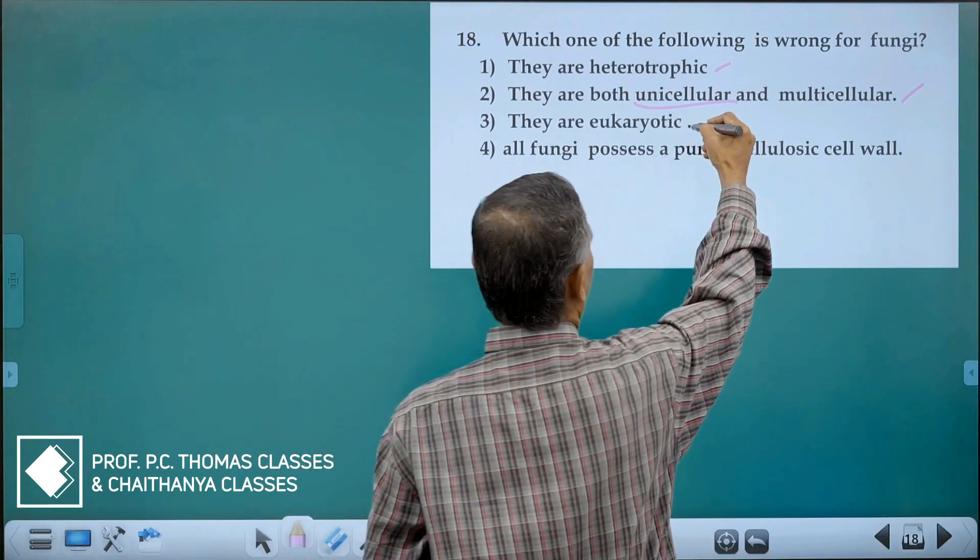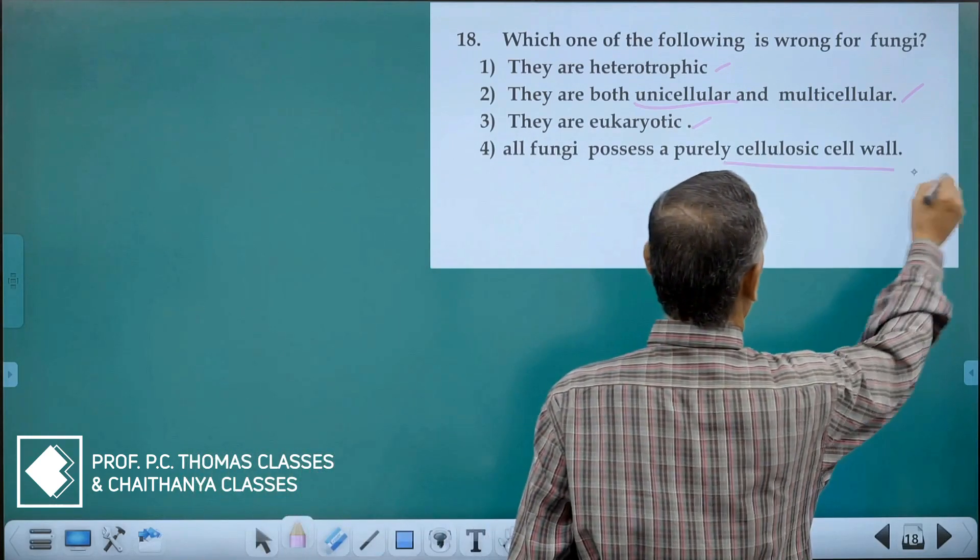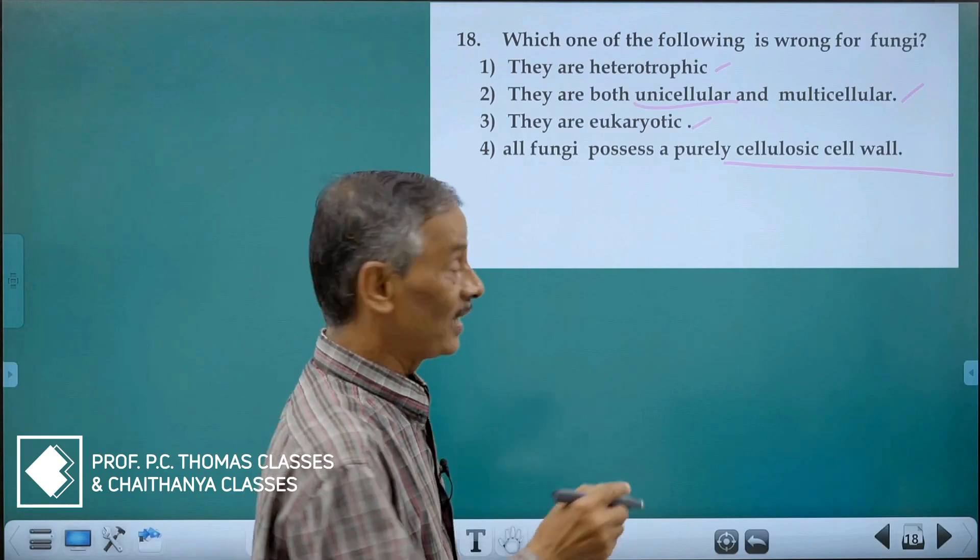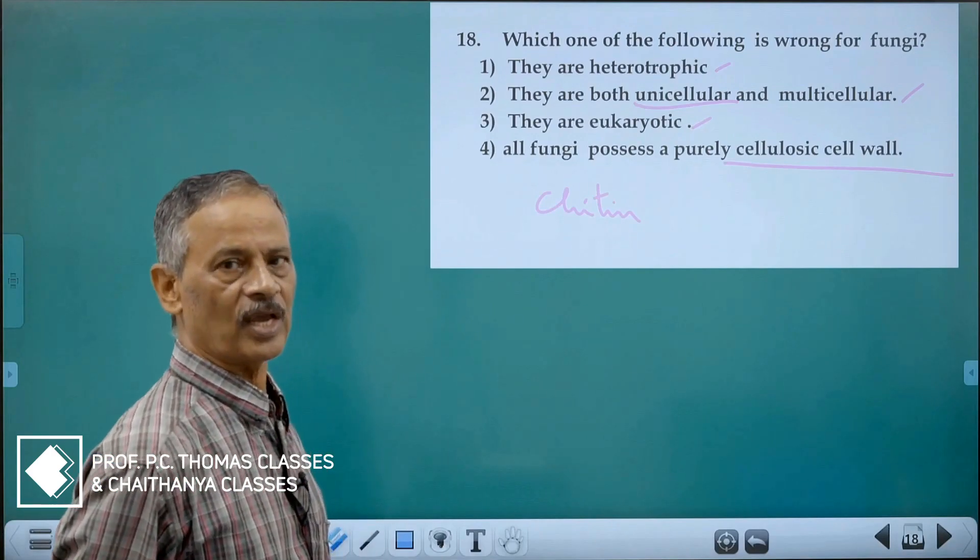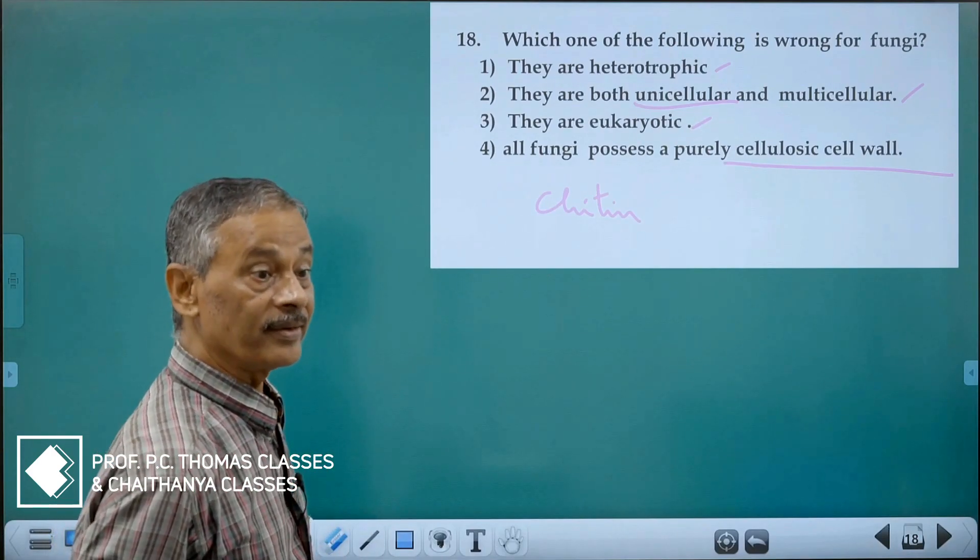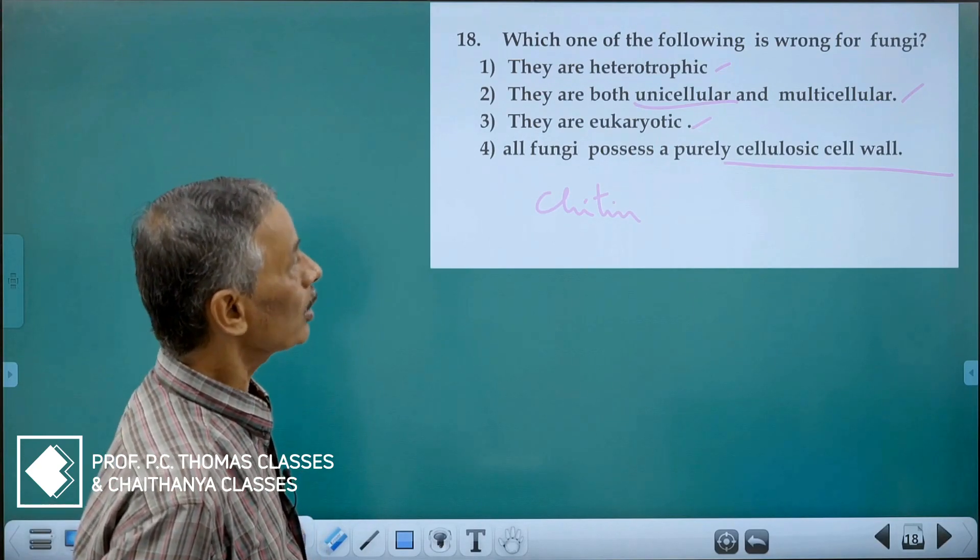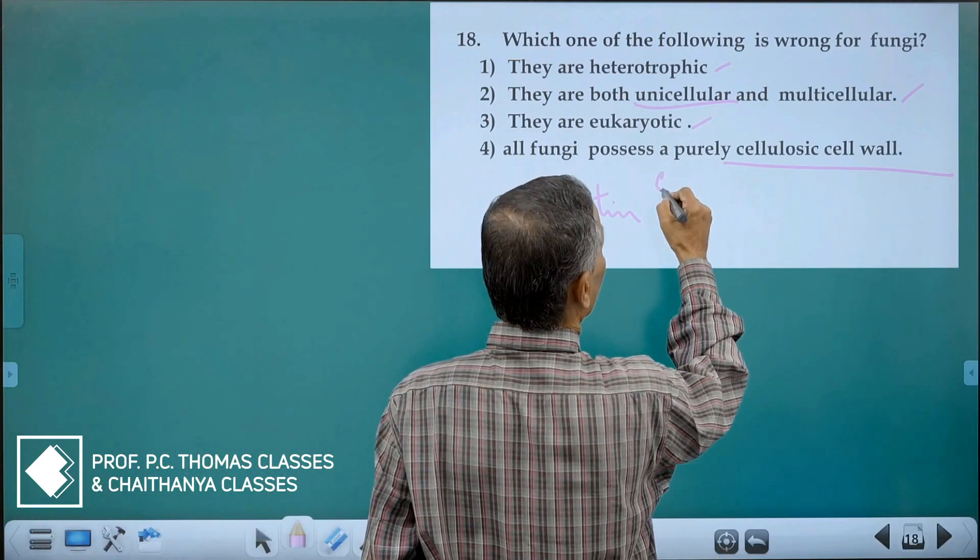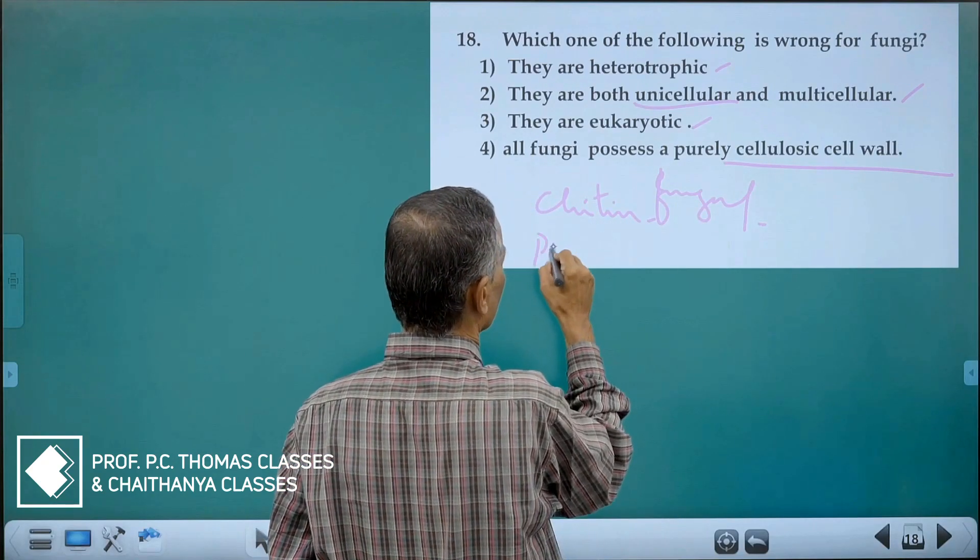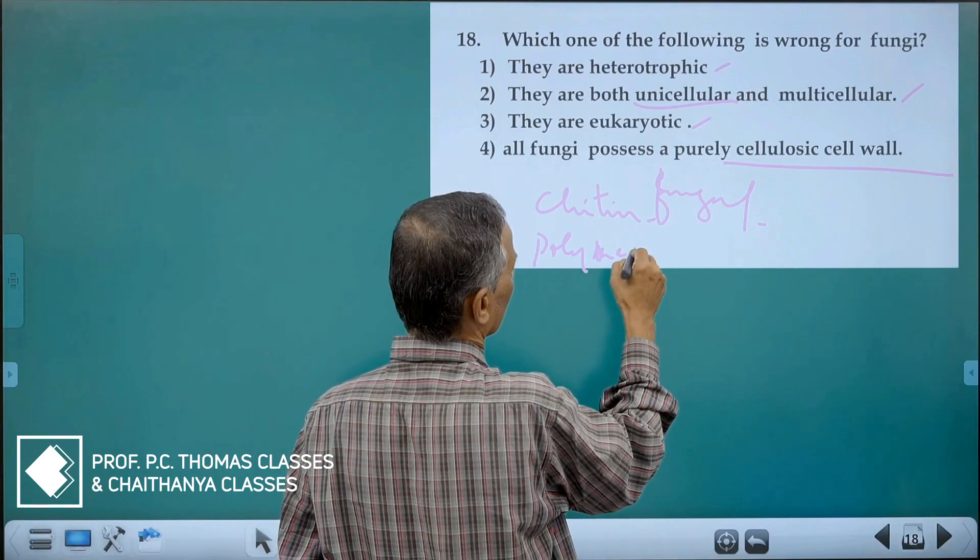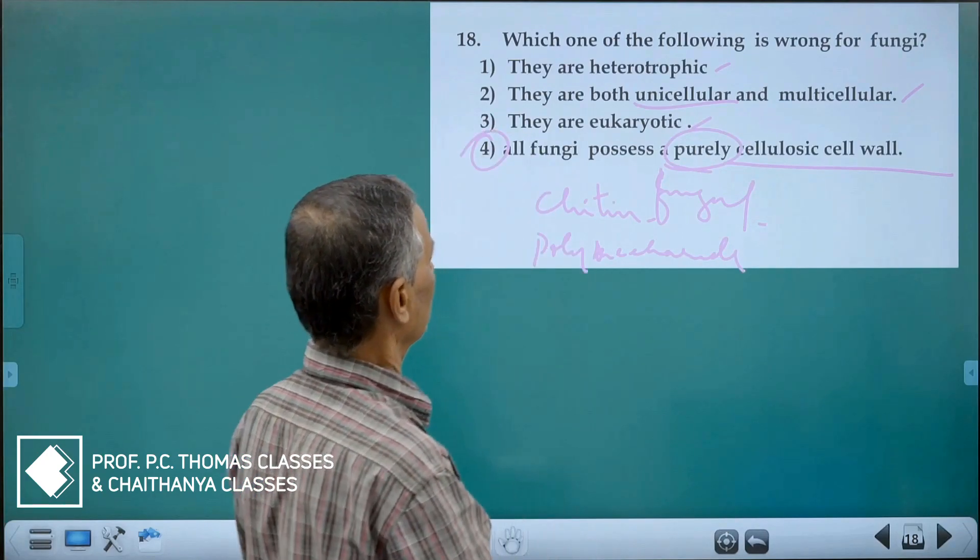They are eukaryotic, correct. All fungi possess purely cellulosic cell wall? No, their cell wall is chitin, N-acetyl glucosamine, a polymer of N-acetyl glucosamine. It is also called fungal cellulose. It is not pure cellulose. It is chitin plus polysaccharides. So purely cellulose is a wrong one. Clear?